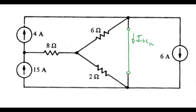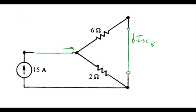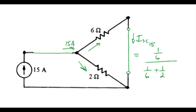For the last part, let's find the short circuit current due to the 15 amp source. We'll take the other two out and remove the series resistor for the same reasons discussed earlier. We have another current divider with 15 amps coming in — some goes one way, some the other — and the current we want works out to be 3.75 amps.